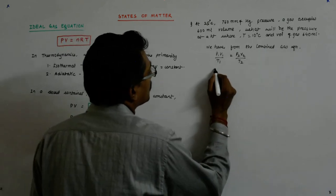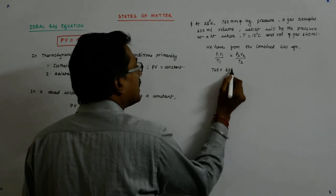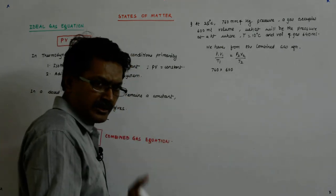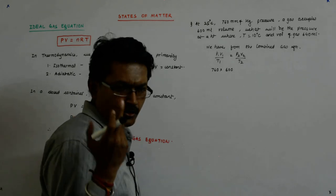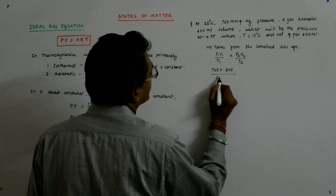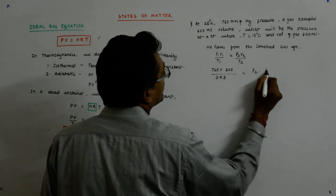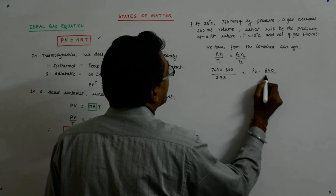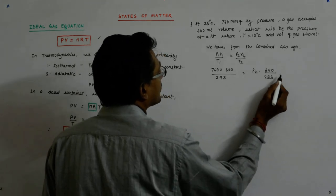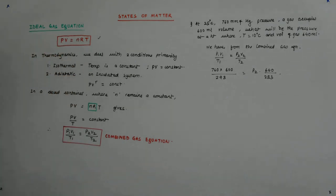So I write 760, volume in ml - I do not even bother to take it to liters. Meter cubed is absolutely out. This is 298 equals pressure that is unknown. My volume is that, and the temperature is 283, though normally for problems we take it to be 273.